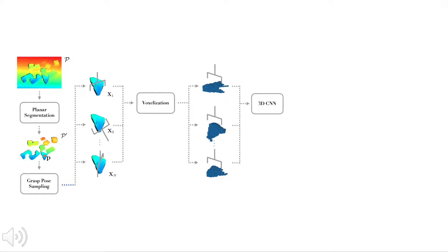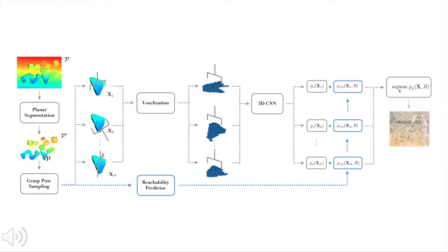The 3D CNN evaluates each voxel grid and gives stability predictions based on its learned features. The reachability predictor evaluates the grasp pose X. We then multiply the two scores and choose the best grasp pose to execute.